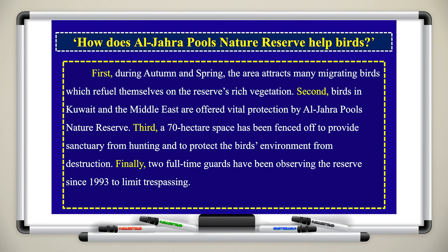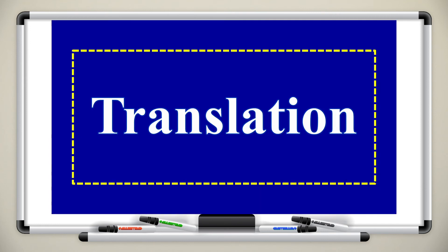This is how your summary should look: 'First, during autumn and spring, the area attracts many migrating birds which refuel themselves on the reserve's rich vegetation. Second, birds in Kuwait and the Middle East are offered vital protection by Al Jahra Pools Nature Reserve. Third, a 70-hectare space has been fenced off to provide sanctuary from hunting and to protect the birds' environment from destruction. Finally, two full-time guards have been observing the reserve since 1993 to limit trespassing.' It's in paragraph format, uses sequence words, and is paraphrased into our own words.